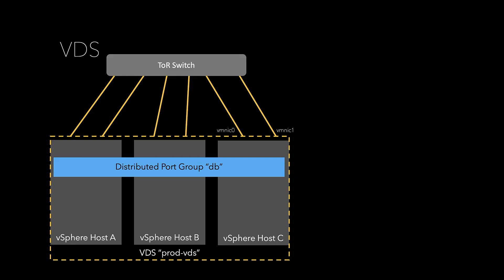So as you see here we have three hosts: vSphere host A, B, and C. Connected to those hosts we have two uplinks per host — vmnic0 and vmnic1 — and this is the same across all of these. Now those hosts are physically connected to a top of rack switch. That top of rack switch is really out of scope for this conversation. Suffice to say we just have uplink connectivity to the physical network.